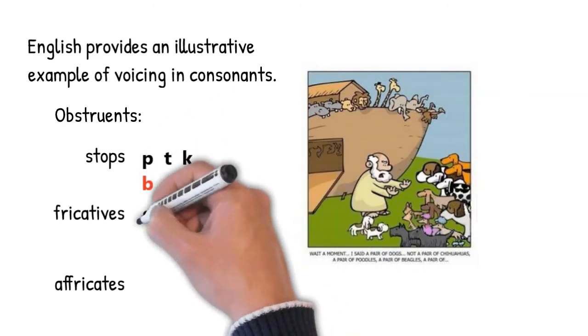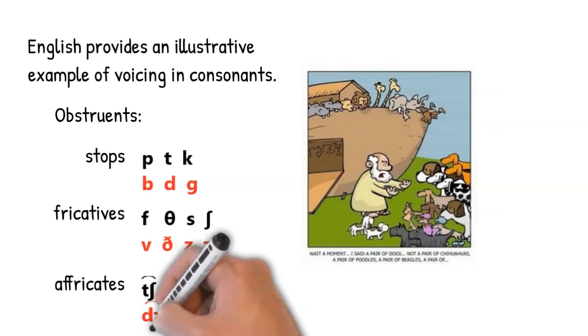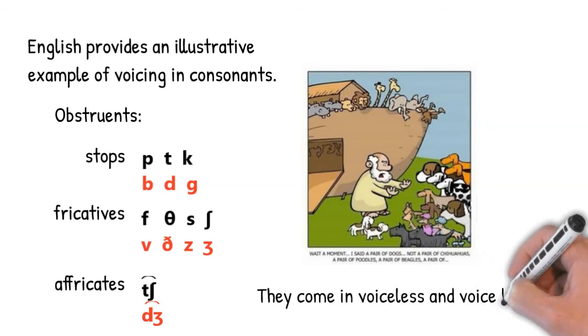If we start with the English obstruents, we notice something particularly interesting about them. Remember, the obstruents are the stops, the fricatives, and the affricates. And what's interesting is that they come in voiceless and voiced pairs.